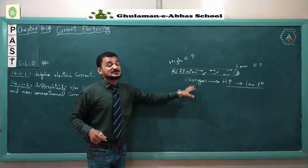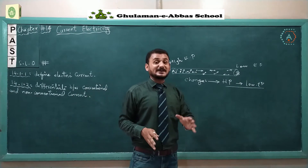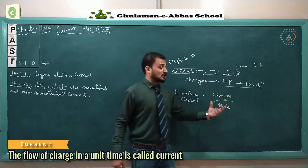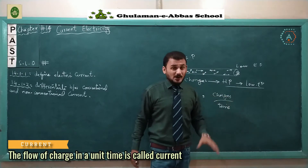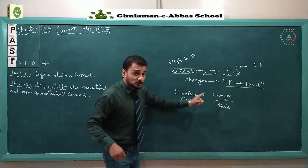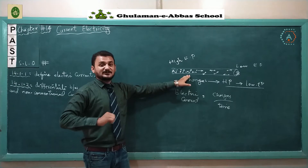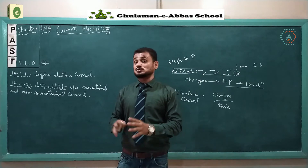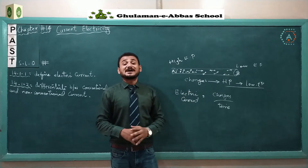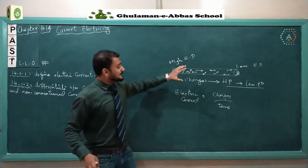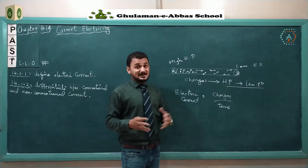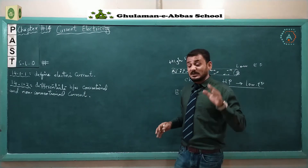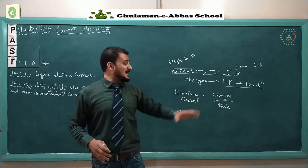This movement of charges in a unit time is known as electric current. The definition of electric current is: the flow of charges in a unit time is called electric current. Without a battery, charges are moving randomly in every direction and there is still no electric current. When we connect a conductor with a battery, all the charges move in one direction — in the direction of the electric field — and this constitutes an electric current.